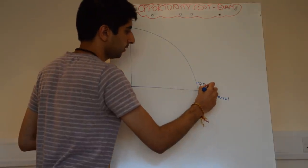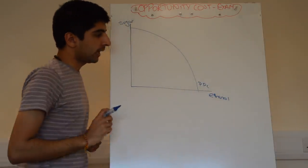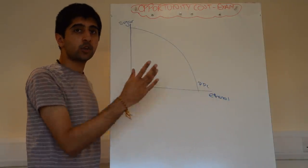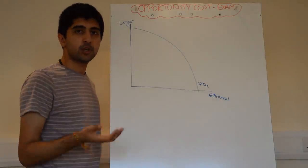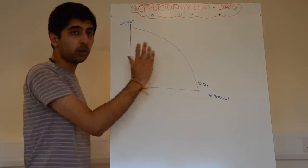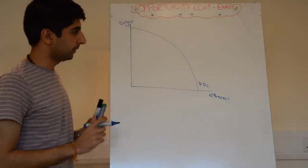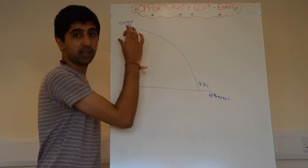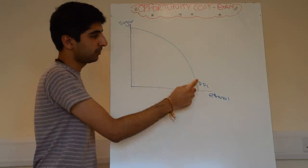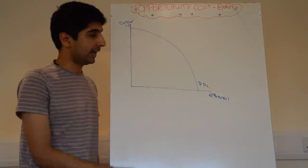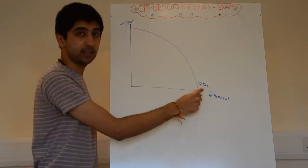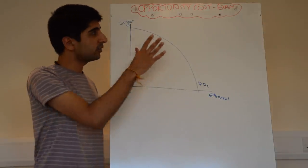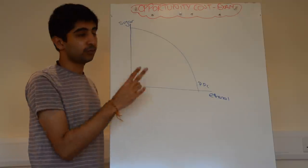Label it like that and then draw your PPC. Now, you can draw PPC shapes like this. You can draw a linear PPC, which shows constant opportunity cost. That's fine. Just draw one of those two shapes. One mark for labelling the axis properly. One mark for drawing the PPC shaped correctly and labelling PPC — don't forget the label. So already, without even touching opportunity cost, you've got two marks.